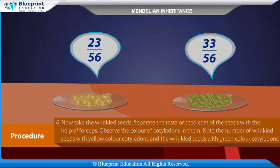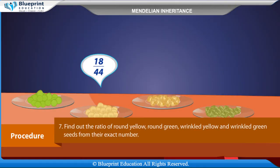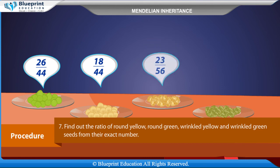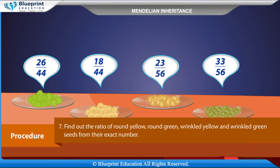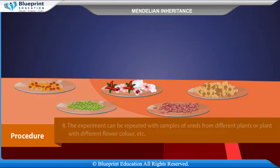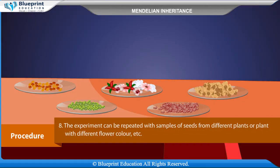Find out the ratio of round yellow, round green, wrinkled yellow, and wrinkled green seeds from their exact number. The experiment can be repeated with samples of seeds from different plants or plants with different flower color.